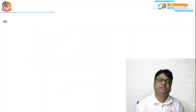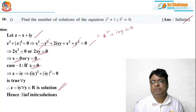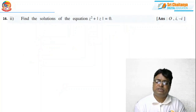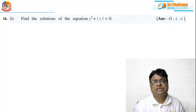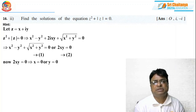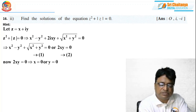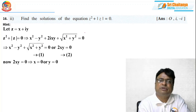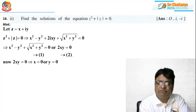A similar model question is problem 16 part 2. See the difference: the first was z² + |z|² = 0, and this one is z² + |z| = 0 — note |z| instead of |z|². I apply the same concept. Take z = x + iy, so z² + |z| = (x² − y² + √(x²+y²)) + 2ixy = 0, separating real and imaginary parts as equations 1 and 2.